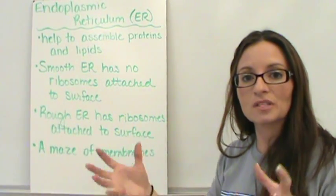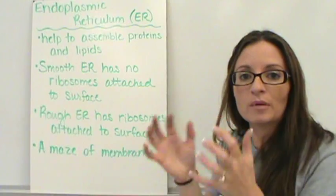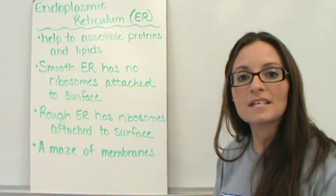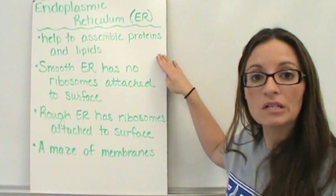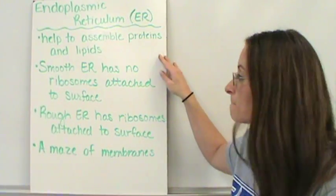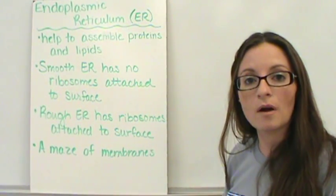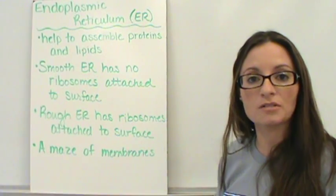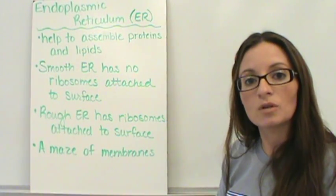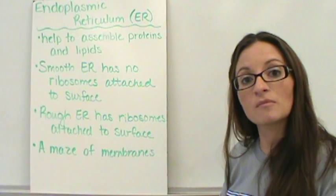So what we have to do is we have to take it and fold it and shape it into the correct way for it to actually function correctly. So the endoplasmic reticulum takes and does that. Now you are going to notice two different parts of endoplasmic reticulum within the cell. Some of them will have ribosomes attached, and some of them will not.